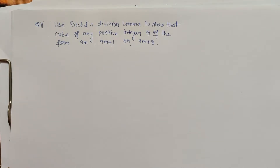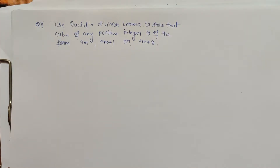Hello friends. This question is in continuity with the question in the previous video, where we proved that the square of any positive integer is of the form 3m or 3m plus 1. But in this question we are going to see how we can prove that the cube of any positive integer is of the form 9m, 9m plus 1, or 9m plus 8 — using Euclid's division lemma.